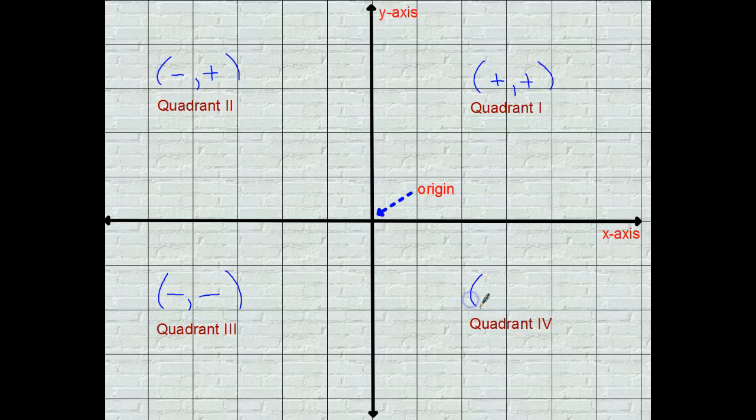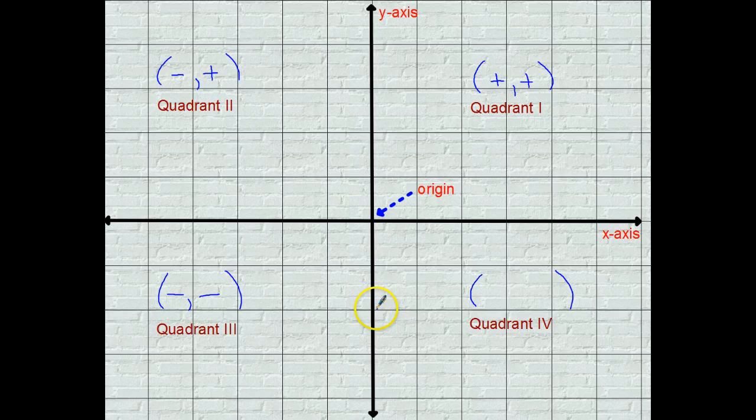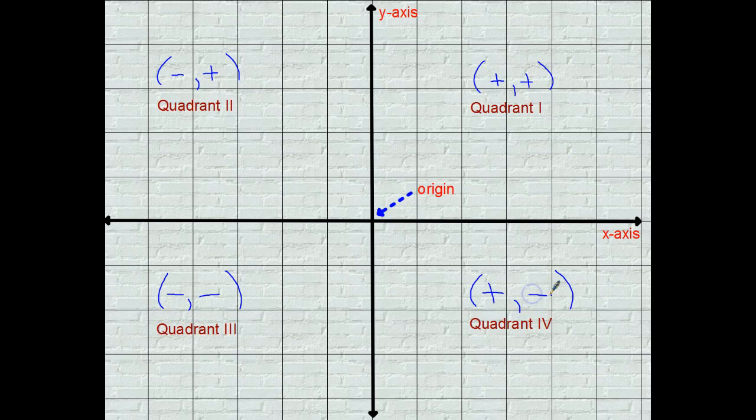And then our last quadrant in the lower right, we always start from the origin, which to the right of zero is positive, and downward is negative. So the x-coordinate is positive, and the y-coordinate we went downward, which is negative.